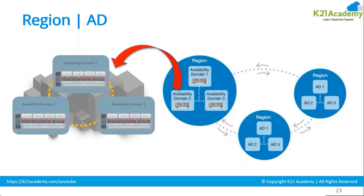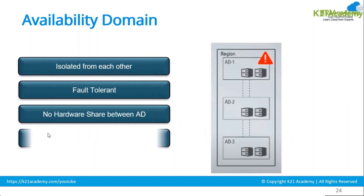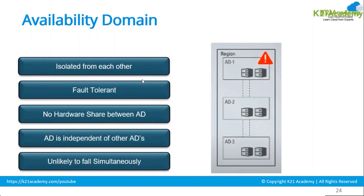Regions can be countries apart. Within a region, availability domains are just 35 to 50 miles apart, all connected with high bandwidth and low latency network, without any resource sharing. In case one data center is down, it is not going to affect the other two. Each availability domain is isolated, fault tolerant, with no hardware sharing and is independent of other data centers.